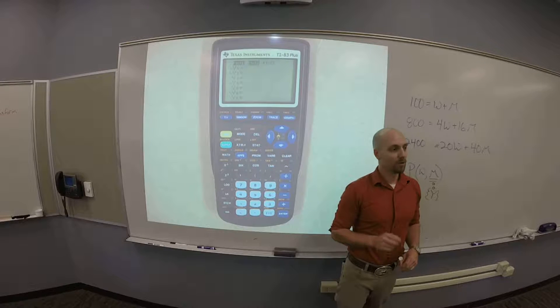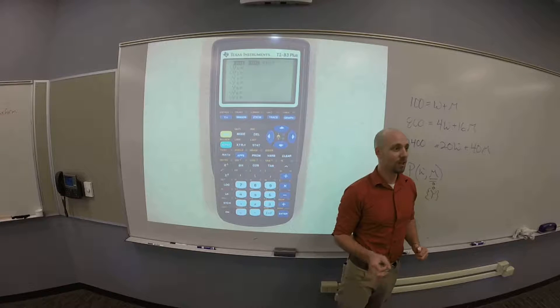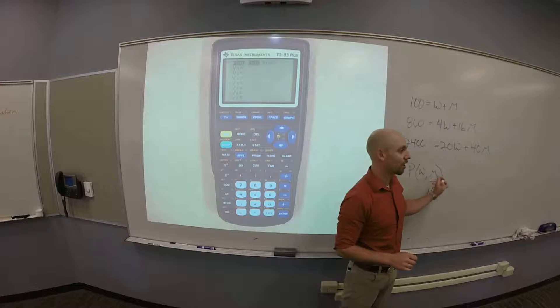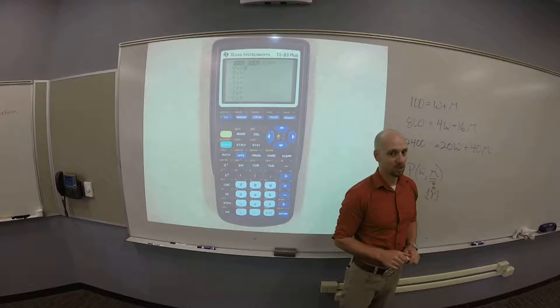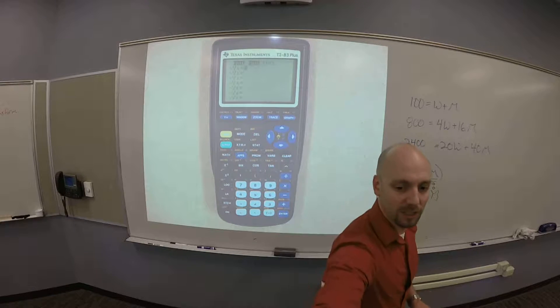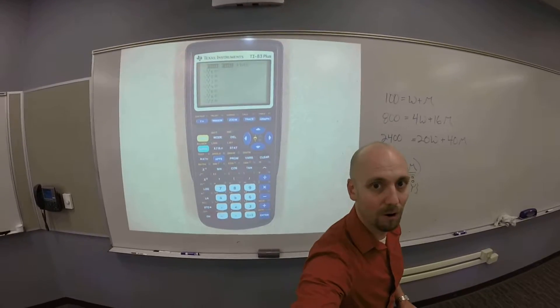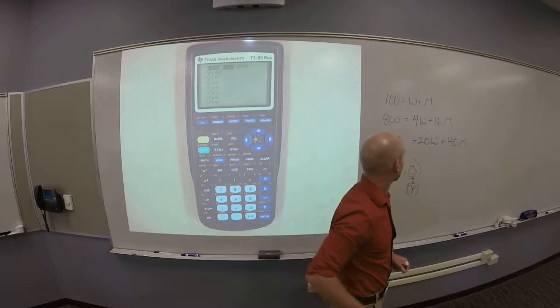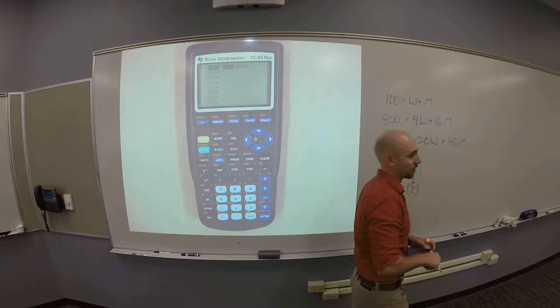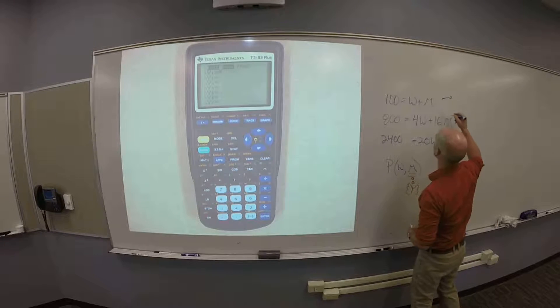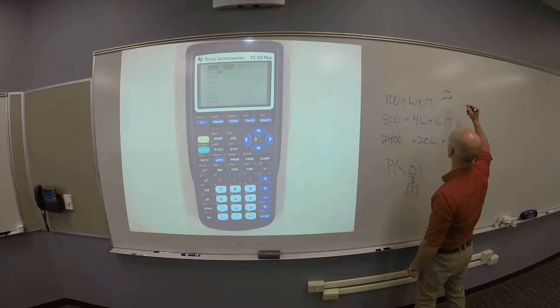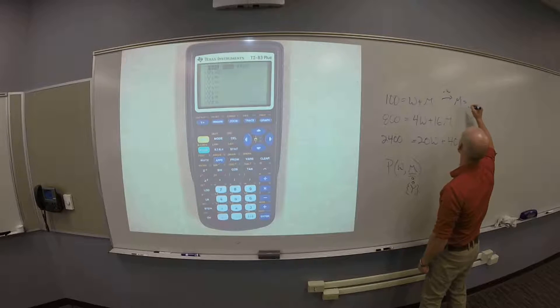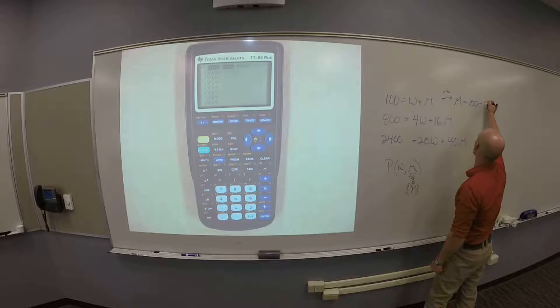So, that means I'm going to want to take each of these and solve for M. You have to solve them all for the same variable and it really should be the second one here otherwise you'll have issues. So, if I'm solving all of these for M, how do I manage that? Like what do I need to do to this first one?